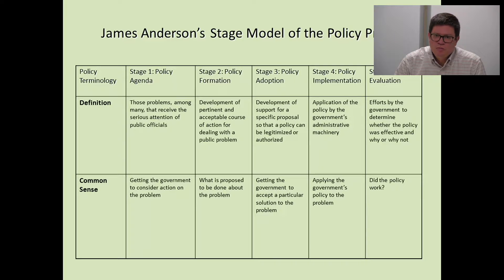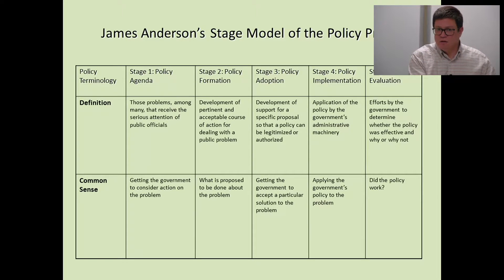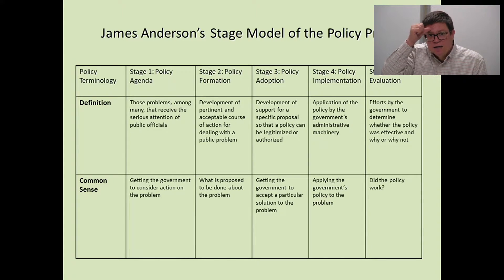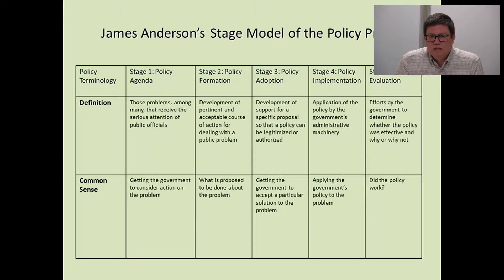How do we end up with maybe three or four things being done in any given year in Congress? One key factor is that elections are very important to agenda setting. For example, after eight years of democratic rule there's been a fundamental disconnect between the agenda of the Obama administration and the agenda of the Trump administration. Elections have consequences, and those consequences shift the agenda.